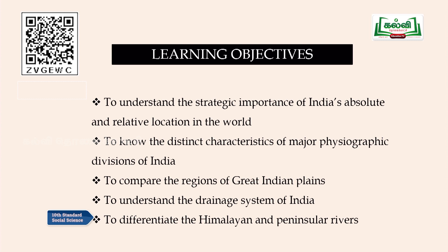The fourth objective is to understand the drainage system of India. The drainage system refers to the rivers - their types, where they start, where they end, and which states they pass through. The fifth objective is to differentiate the Himalayan and Peninsular rivers. Himalayan rivers are perennial rivers whereas Peninsular rivers are non-perennial.